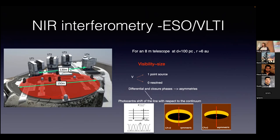Here is an example of closure phase and what it means. If I have a disk and put my baseline along a certain direction, for a face-on disk the illumination from both sides will be equal, giving a closure phase of zero. But if the disk is inclined or something else is happening, we have uneven illumination, which creates a non-zero closure phase. This is a really powerful observable we can use for imaging and to understand asymmetries in the circumstellar environment.